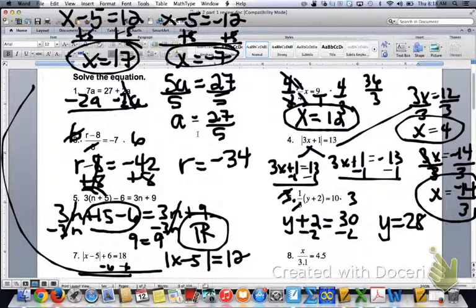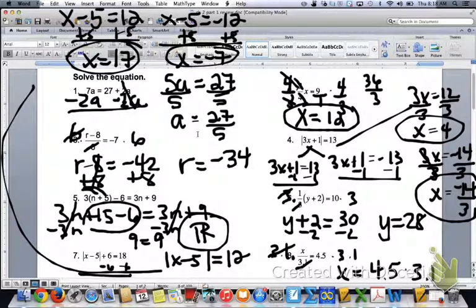Number 8, x divided by 3.1 equals 4.5. Opposite of dividing is to multiply. Multiply both sides by 3.1. So you get x equals 4.5 times 3.1. I don't have a calculator on me. I'm not sure what that is. So multiply that out. That's it. Alright, I'm going to stop there. I'll do the rest on a couple more videos. Thank you.